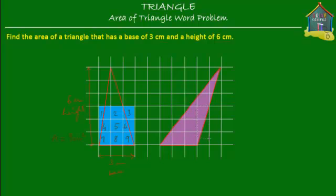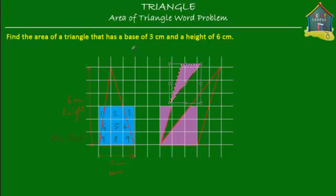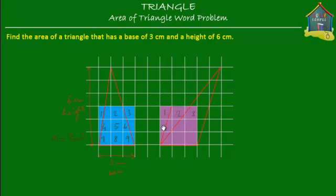Let's cut up some pieces of this triangle and fit them elsewhere and see how many squares they're able to fit into. This piece fits into here nicely. Now we take this part of the triangle, turn it, and fit it here — it fits nicely. So let's count how many squares we are able to fill: one, two, three, four, five, six, seven, eight, and nine. The purple triangle also has the same area as the blue triangle, which is nine centimeters square.